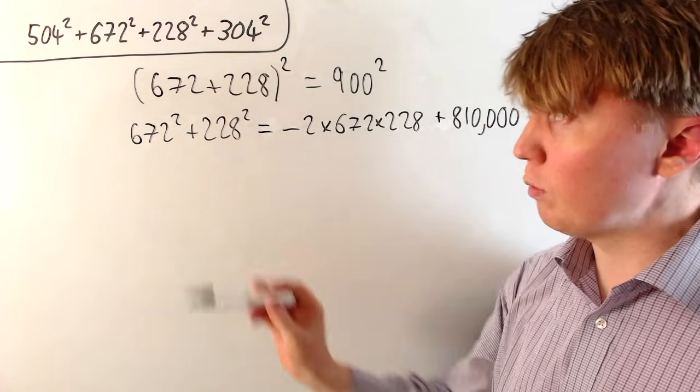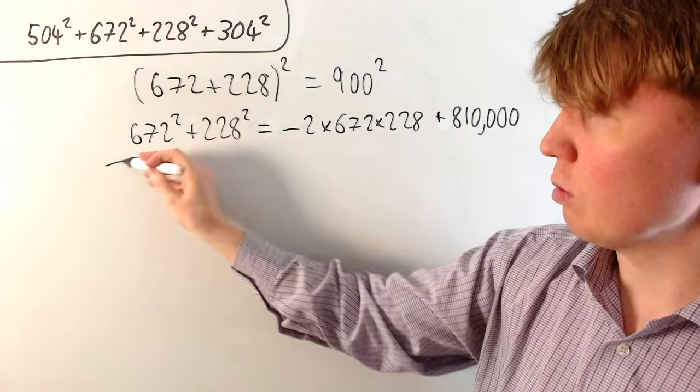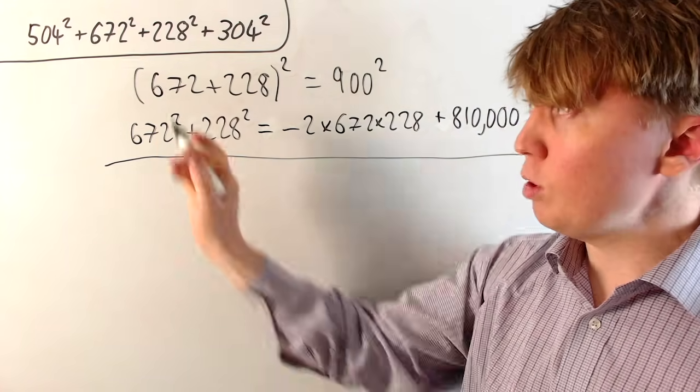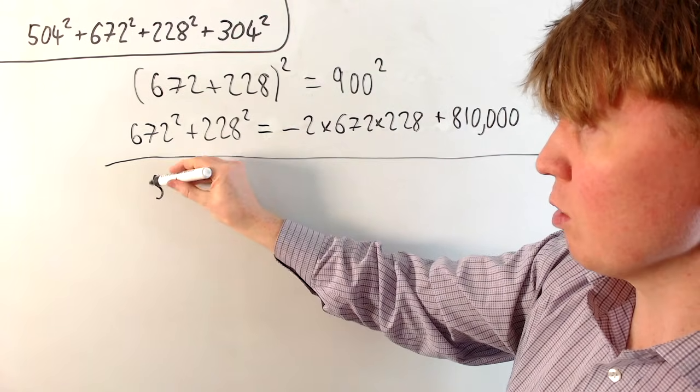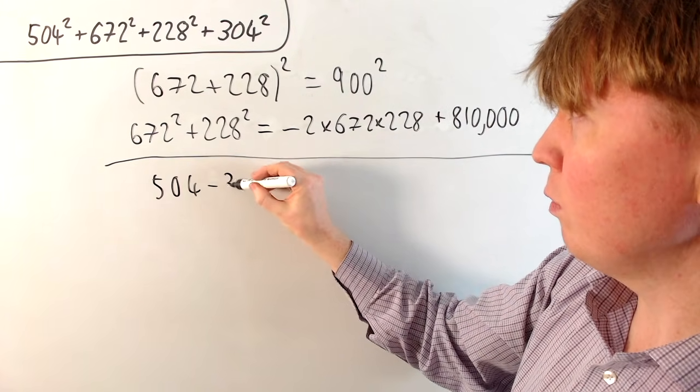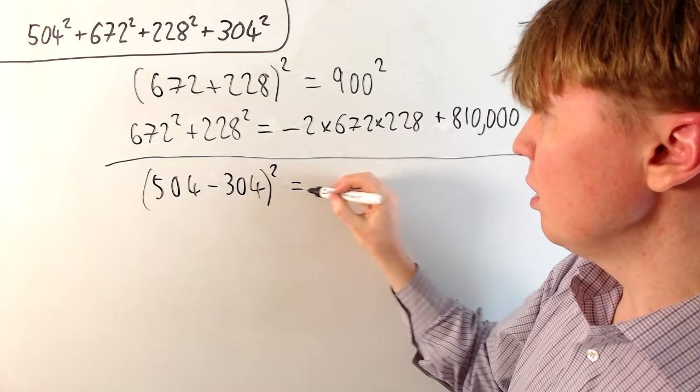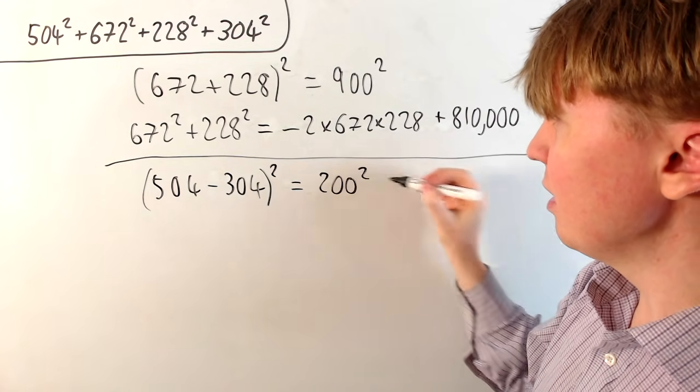We can do something quite similar for the 504 and 304. If we add them together, that doesn't give us anything particularly nice to work with. But because they both end in 04, we could subtract them instead. So 504 minus 304, we can see, is just going to be 200. So if we square this, we're just going to get 200 squared.